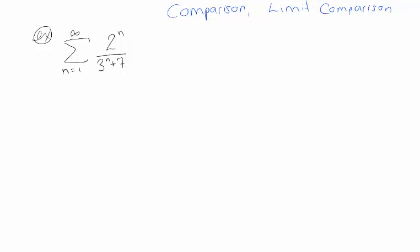Let's do a few examples of the comparison test and the limit comparison test. Let's start by trying to determine whether this series converges or diverges. Well, this looks a lot like a geometric series — if there weren't that pesky plus 7 there, this would be 2/3 to the n, and it would be a nice convergent geometric series. Our first observation is that these terms look a lot like the geometric series terms.